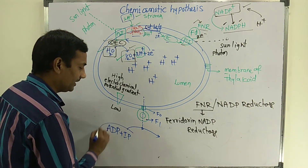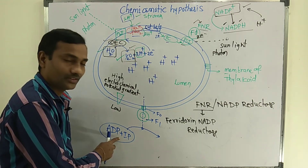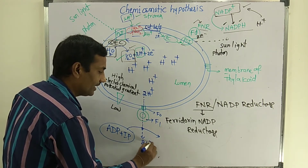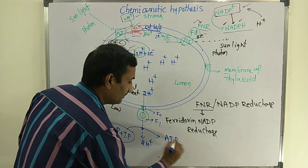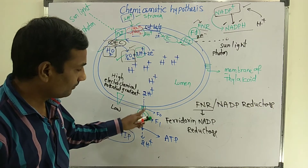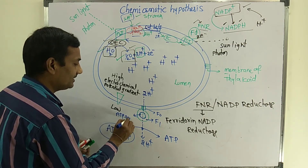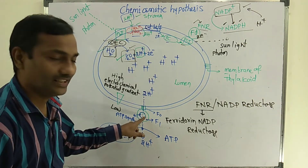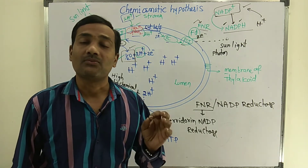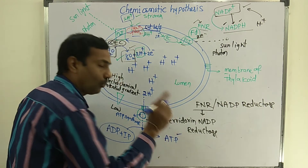ADP plus inorganic phosphate — adenosine diphosphate and inorganic phosphate — will be in the stroma region. Whenever two protons pass through the F0, F1 particle, that helps in synthesis of one ATP molecule. F0, F1 particle consists of one enzyme known as ATP synthase. This ATP synthase enzyme, found in the F0, F1 particle, helps in the formation or synthesis of ATP. Two protons are needed for formation of one single ATP.